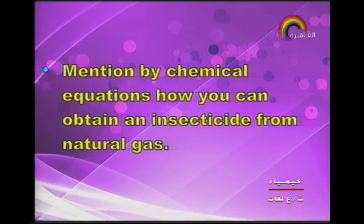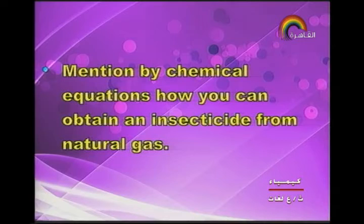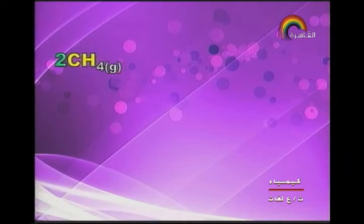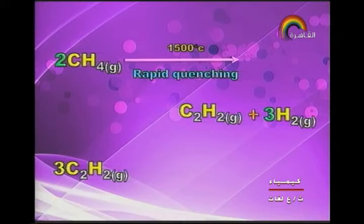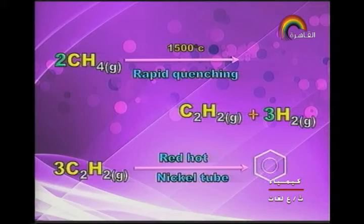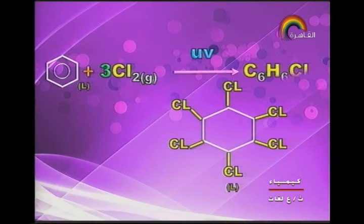Next type of question: mention the biochemical equation — how can you obtain insecticide from natural gas? Methane by rapid quenching at 1500°C gives acetylene and hydrogen gas. Then acetylene on a red hot nickel tube gives benzene. Adding chlorine to benzene under ultraviolet light produces gamma hexane C₆H₆Cl₆, hexachlorocyclohexane.